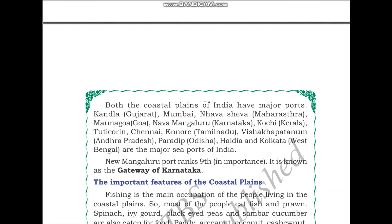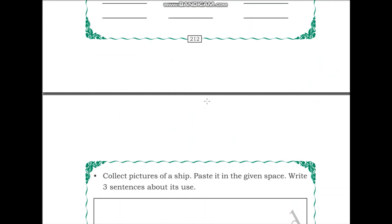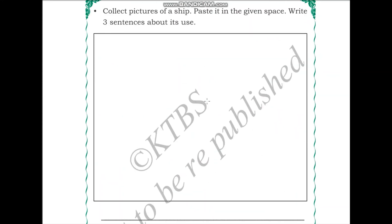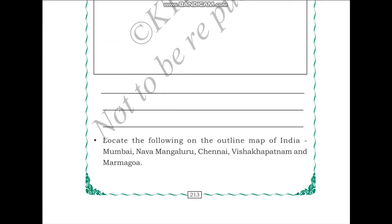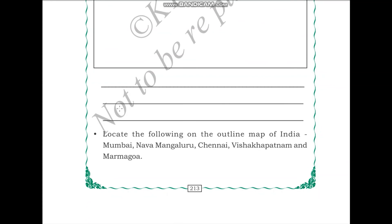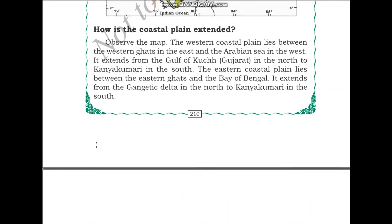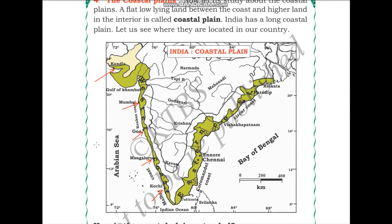For the next activity, collect and paste pictures of a ship and write three sentences about it. Finally, locate the following on the outline map of India — you can do this with the help of the example map shown. This is the end of the coastal plains. I will see you all in the next video.